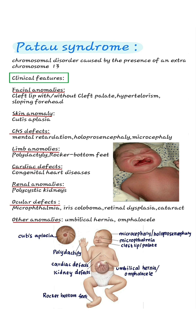Mental retardation. Limb anomalies include polydactyly, which is the presence of extra fingers or toes, and rocker bottom feet, characterized by a convex sole.